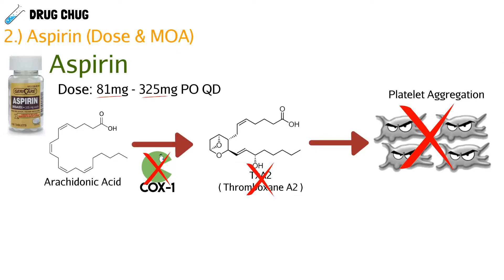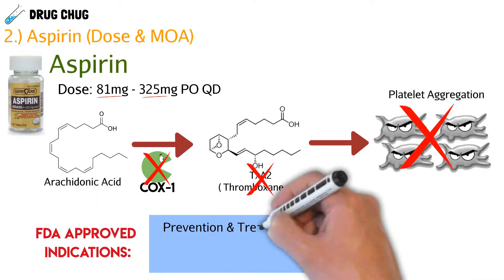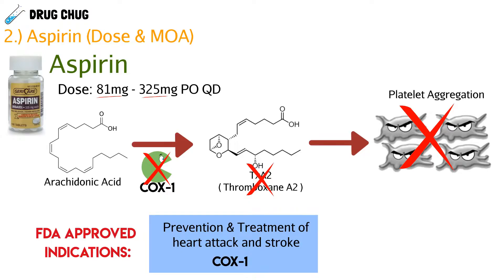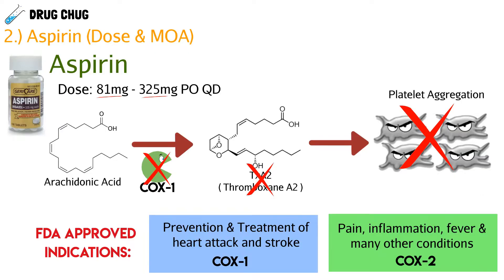You only need 81 milligrams to fully block the COX-1 pathway. Because of this, the FDA has approved aspirin to prevent and treat heart attack and stroke. If a patient takes a regular 325 milligram tablet, it not only blocks COX-1 but can also block the COX-2 pathway, which has to do with pain, inflammation, and fever — but we'll cover that more in the NSAID video.